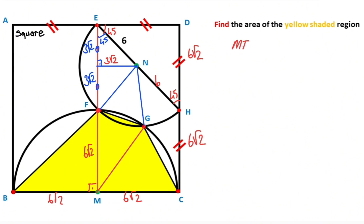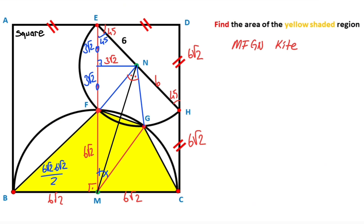That means we get a kite, so MFGN is a kite. Therefore we know that in every kite, if we connect the vertices like this, we get an angle bisector line. The area of triangle MBF is equal to 6√2 × 6√2 / 2, which equals 36 square units.